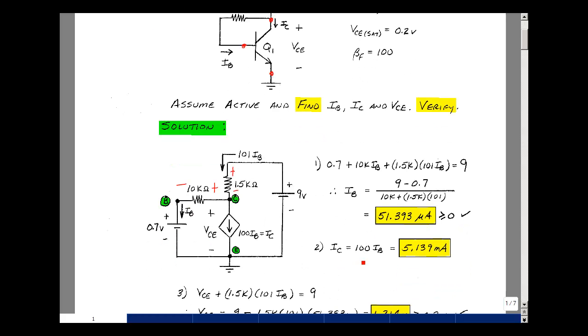Our collector current is beta F Ib, where beta F was 100. 100 times this number is 5.139 milliamps. Of course, this is going to be positive because this was positive, so we don't need to check that.